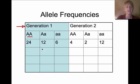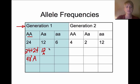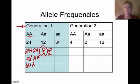If we have homozygous dominant (AA) with 24 individuals, that gives us 48 capital A alleles. For the heterozygous (Aa) individuals — say 12 of them — we get 12 capital A and 12 lowercase a. Adding those together: 48 + 12 = 60 capital A alleles.